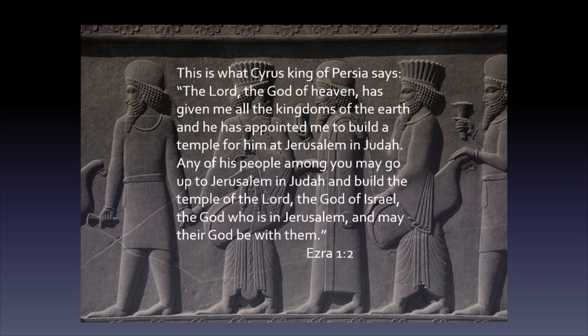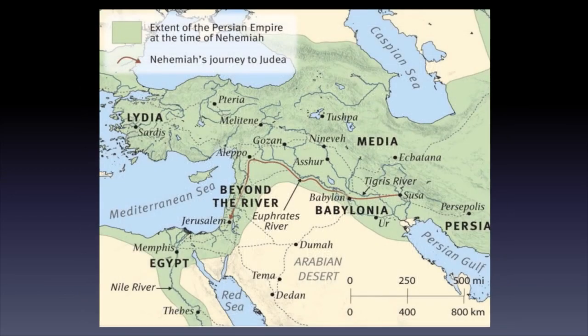This decree, which fulfills a prophecy in Isaiah, is quoted at the end of Chronicles as well as the beginning of the book we know as Ezra. Here is a map of the ancient lands held by Persia around the time of Nehemiah, about 500 years before Christ. The lands controlled by the Persians are colored in green. The area of Judah was called "beyond the river," or trans-Euphrates, because from Persia it was the territory beyond — that is, west of — the Euphrates River.